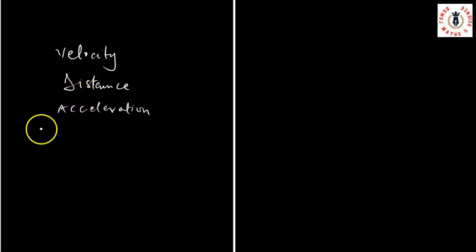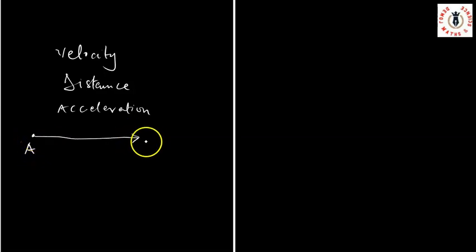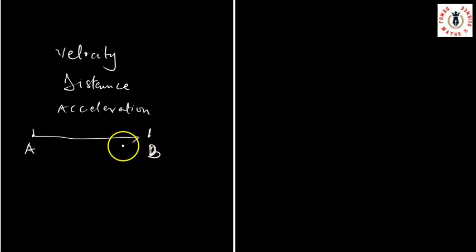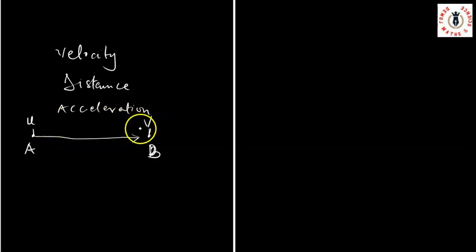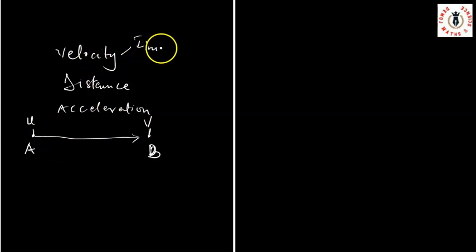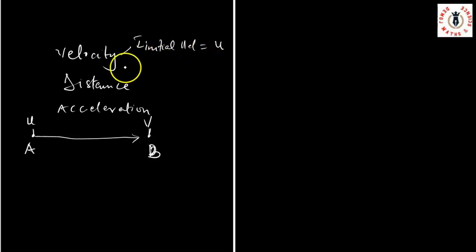Now, if I have to move from two points — take this point to be point A, and I'm moving to point B. Between point A and point B, I would have covered a distance. I would have moved from an initial velocity, probably to a final velocity. I want to call my initial velocity U, and I want to call my final velocity V.